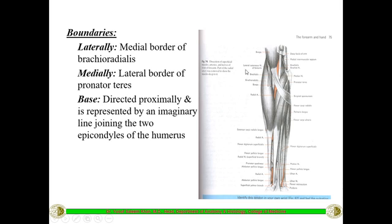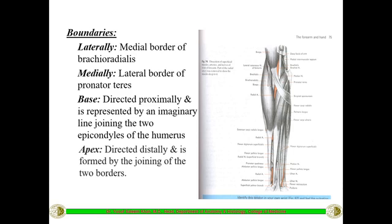The lateral border of the pronator teres forms the medial boundary of the cubital fossa. The base is an imaginary line drawn from the lateral epicondyle to the medial epicondyle of the humerus. So there are two muscles on either side and the base is this imaginary line between the two epicondyles.